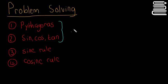Pythagoras, sine, cos, and tan - they're only for right-angled triangles. And the other ones, sine rule and cosine rule, can be used for other triangles as well.